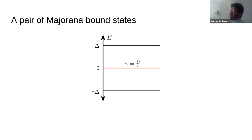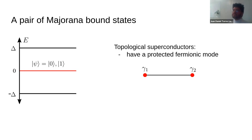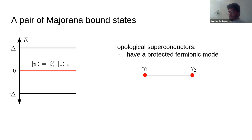Let's look at Majoranas in more detail. This line represents a single fermionic state — a single fermion can be empty or occupied, zero or one. In a topological superconductor, Majoranas typically appear at the edges of the system. If the Majoranas are far away from each other with no wave function overlap, the states will be exactly at zero energy. This shows the protection of Majoranas against local perturbations and against perturbations smaller than delta.